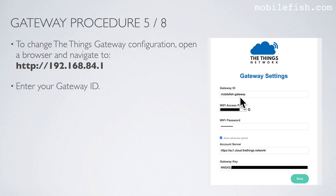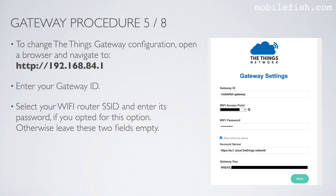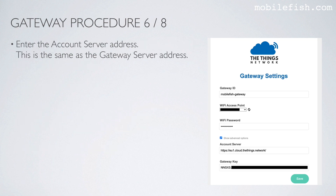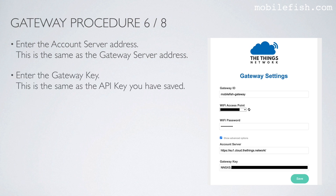Enter your Gateway ID. Select your Wi-Fi router SSID and enter its password if you opted for Wi-Fi, otherwise leave these two fields empty. Select Show Advanced Options. Enter the account server address — this is the same as the gateway server address. Enter the gateway key — this is the same as the API key you saved. Select Save.